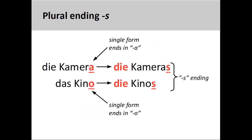The fifth group consists of nouns that, like English, add an -s for a plural ending. Most of these nouns, many of which end in an A or O, are of foreign origin and have been adopted into German. The noun Kamera, camera, is an example, Kameras. The noun Kino, movie theater, is another, Kinos.